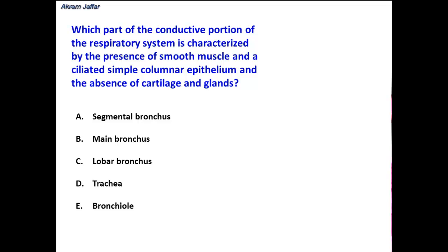Which part of the conductive portion of the respiratory system is characterized by presence of smooth muscle and a ciliated simple columnar epithelium, and the absence of cartilage and glands? So here we have three conditions to fulfill in order to answer this question: presence of smooth muscle, ciliated simple columnar epithelium, and absence of cartilage and glands, and it should be in the conductive portion of the respiratory system.